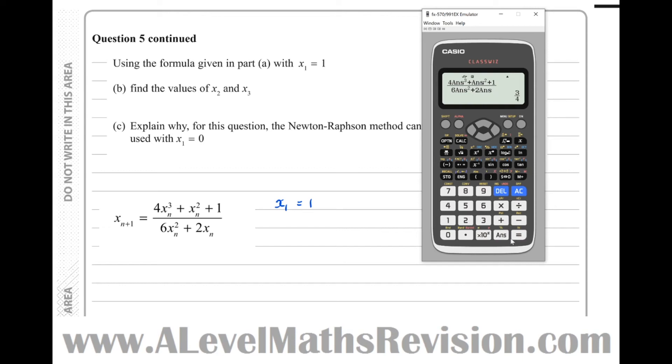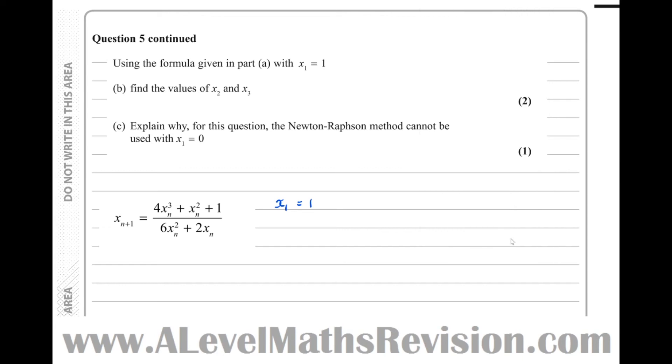Press equals to get the second iteration, which is 3 quarters, so x2 equals 3 quarters.